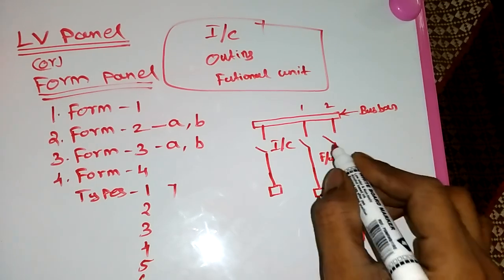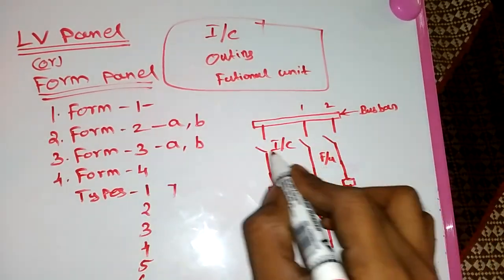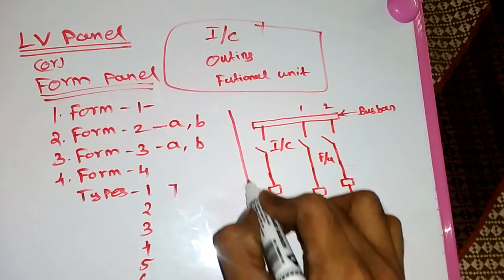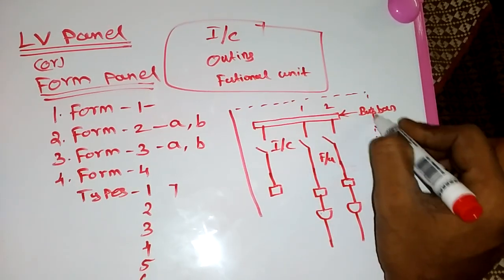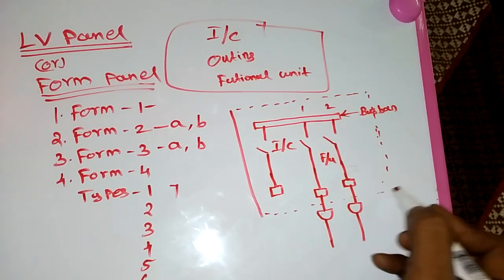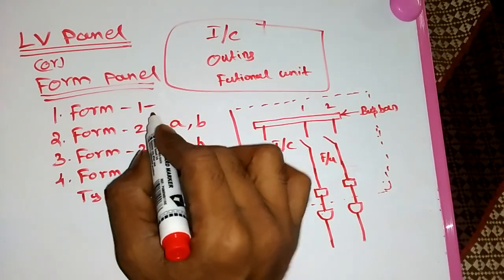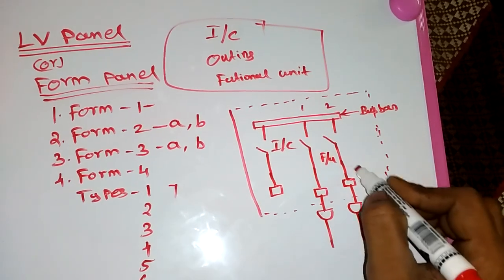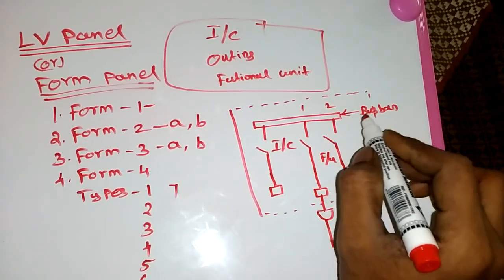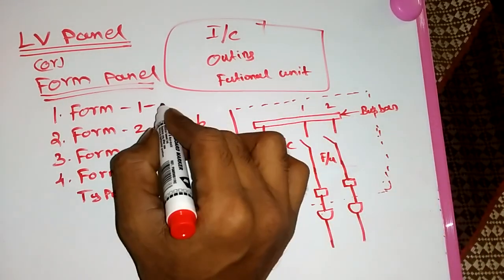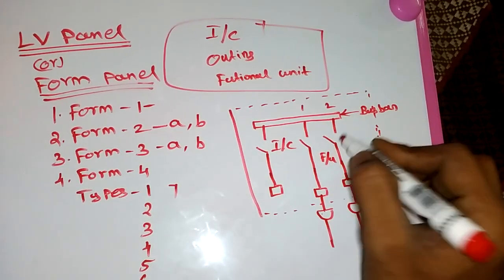This is a general diagram of LV panels. Now, how do we differentiate Form 1 through Form 4? In Form 1, everything is constructed in the same compartment — just consider this as the enclosure. The incoming, functional unit, and outgoing terminals are all kept in the same compartment — that means the same enclosure. This is called a Form 1 panel.